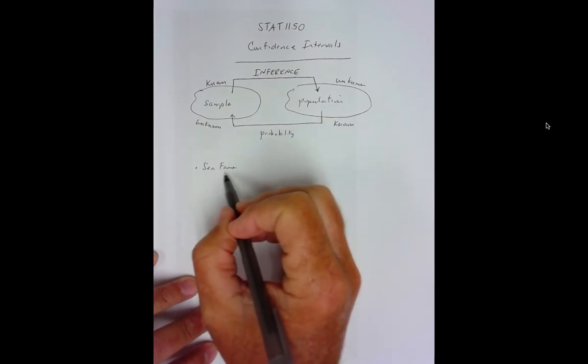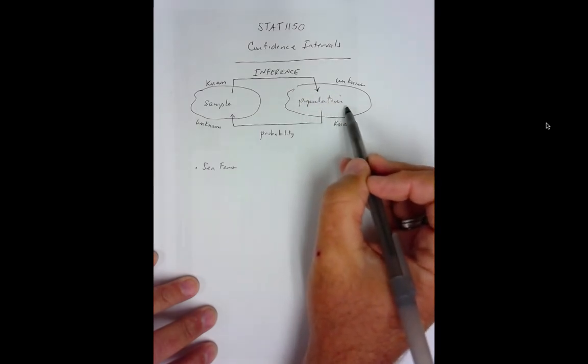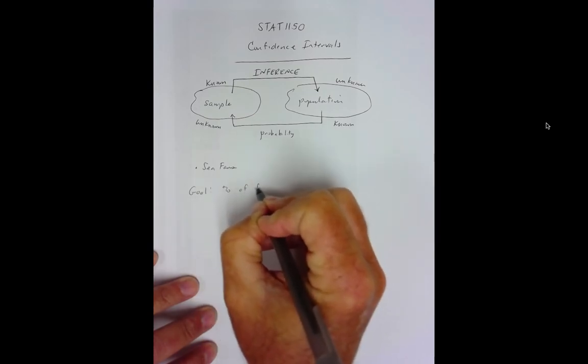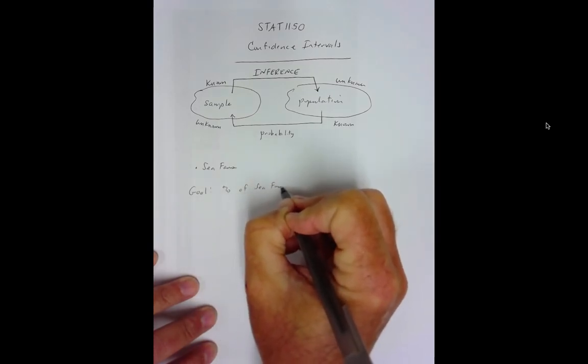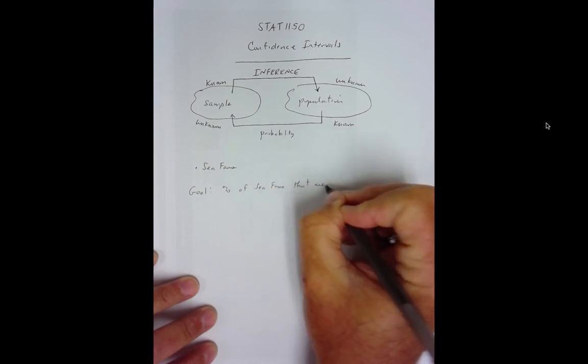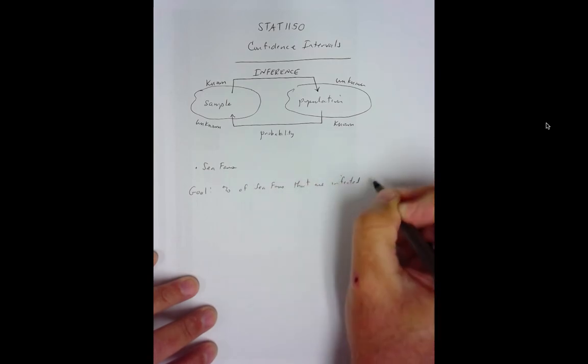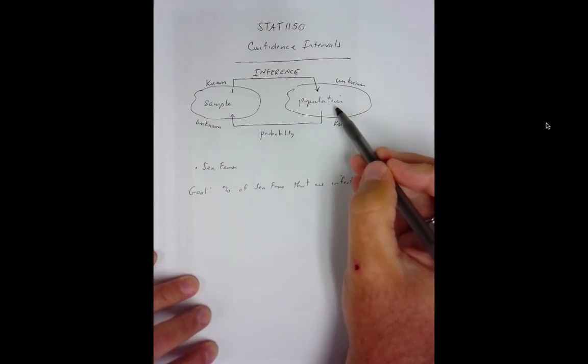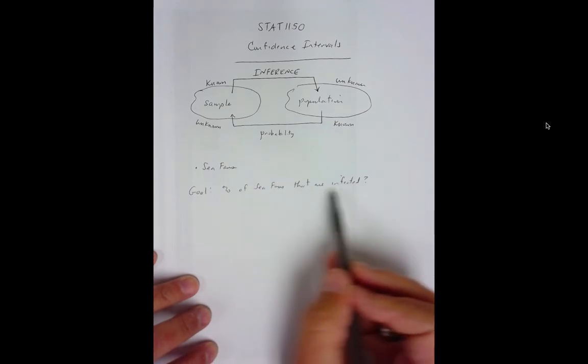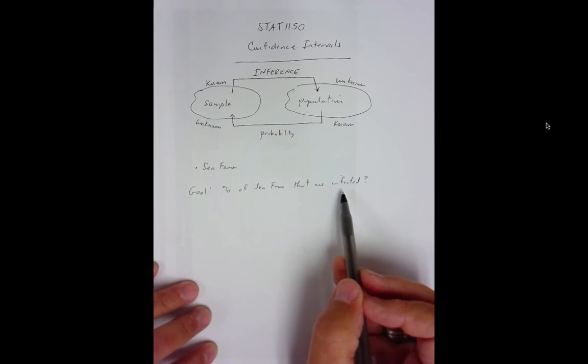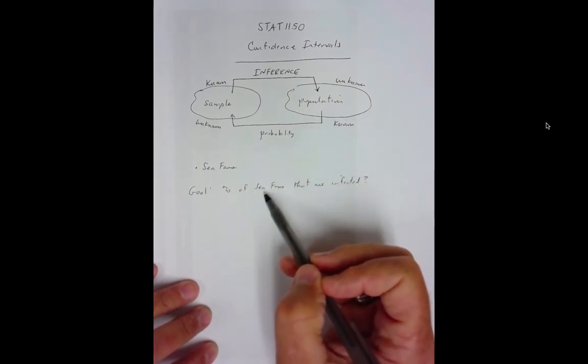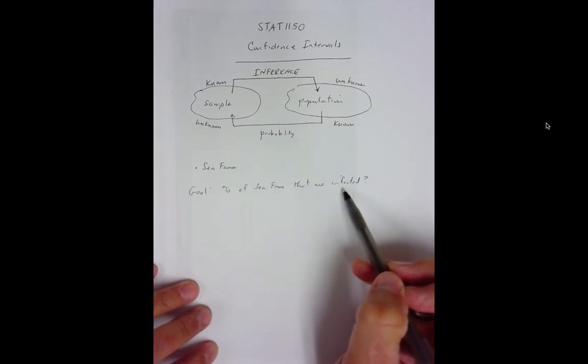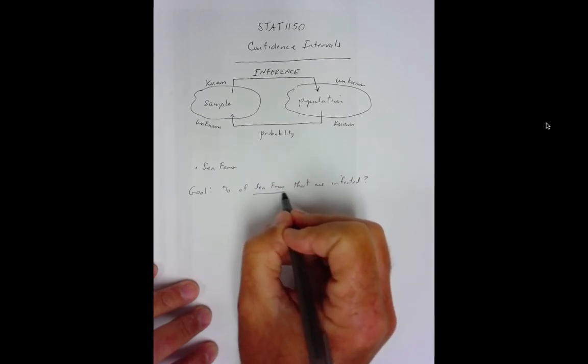So, if you were interested in sea fans and you would like to know what percentage of sea fans are infected—let's put it down here, the goal: to find the percentage of sea fans that are infected. Let's say that's your goal. So, your population would be the percentage of all sea fans that are infected.